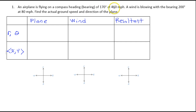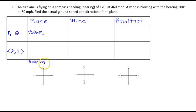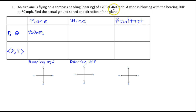The plane is flying at 460 miles per hour — that is the magnitude. Now the direction, we have to be careful. They're giving us a bearing of 170, but bearing is not measured from the positive x-axis, which is what we need. So I'm going to do a slight transformation. For the wind, the bearing is 200 and the magnitude is 80 miles per hour.